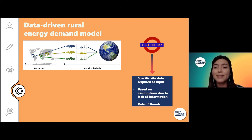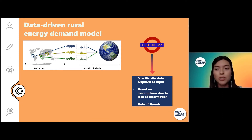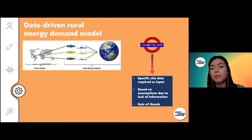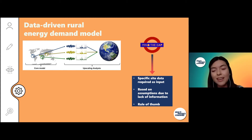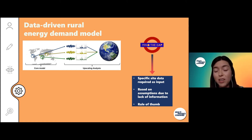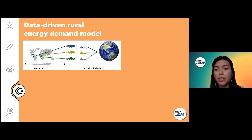Current models have a lot of knowledge gaps because they need really specific site data as input. This means that project developers have to travel to these rural areas in order to get all the data they need to input into their models, which of course makes the project more expensive. These models are also based on assumptions due to the lack of information, and some of them are quite based on a rule-of-thumb method — for example, assuming a mini grid load profile gathered from India would be the same in Guatemala, which of course is not the case.